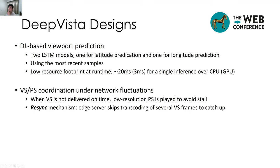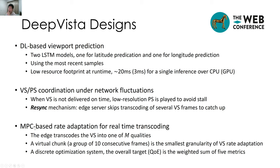We also have a viewport stream and panoramic stream coordination under network fluctuations. When the high-resolution viewport stream is not delivered on time, the low-resolution panoramic stream is played to avoid stall, and we also have a re-sync mechanism — when the edge server skips transcoding of several viewport stream frames to catch up. We also have an MPC-based rate adaptation method for real-time transcoding. The edge server transcodes the viewport stream into one of M quality levels, and a virtual chunk — a group of 10 consecutive frames — is the smallest granularity of rate adaptation, making the optimization discrete.